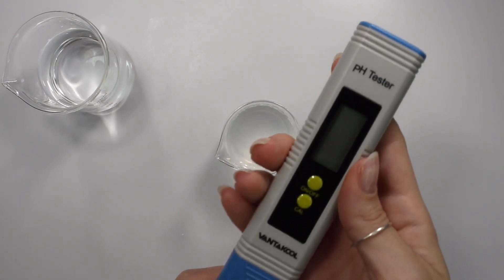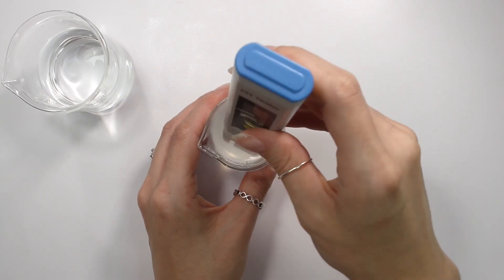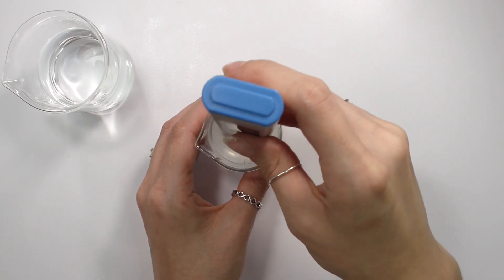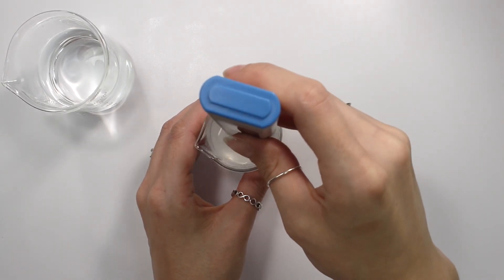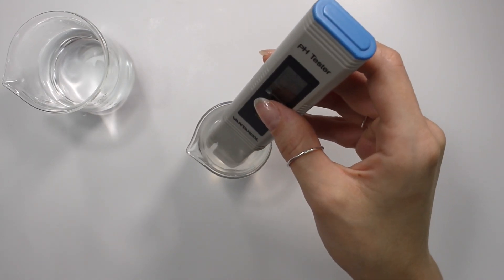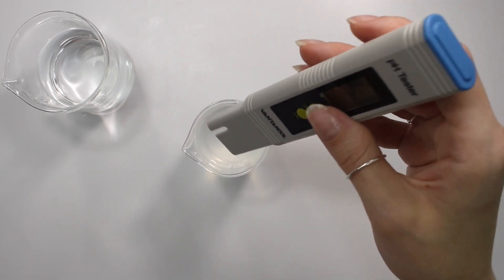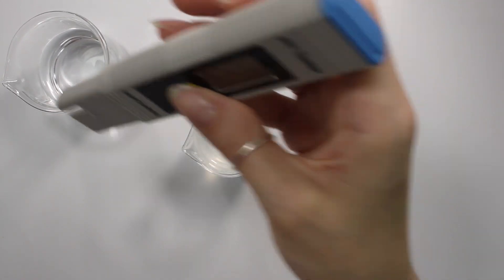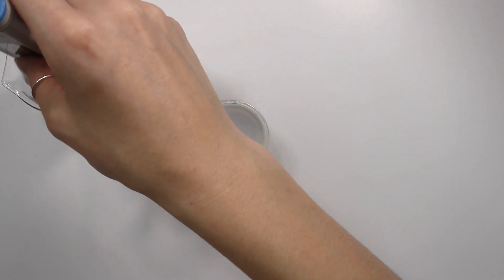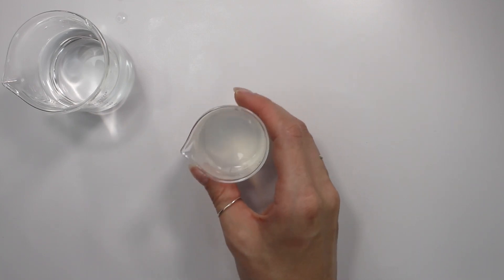So again, we're going to be doing it again with the cheaper pH meter, swishing it around in my solution for about a minute to get a stable pH reading. And this one is reading 5.93. So again, it's off by about 0.20, a little bit lower than that. So this pH meter is definitely reading differently than my more expensive one. But I mean, that's not really the end of the world. It's only off by like 0.20 if that, so it's not too big of a deal.